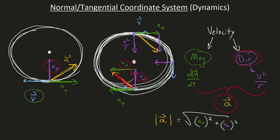This normal-tangential way of thinking is very useful if your origin is at the center of the circle of travel — if your object is traveling on a circle and your origin is right in the middle of it.